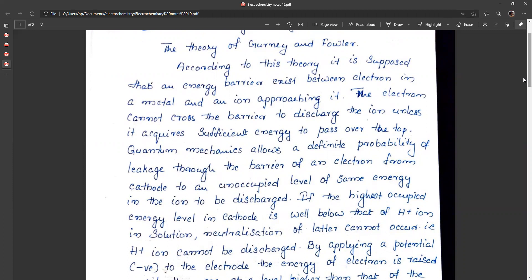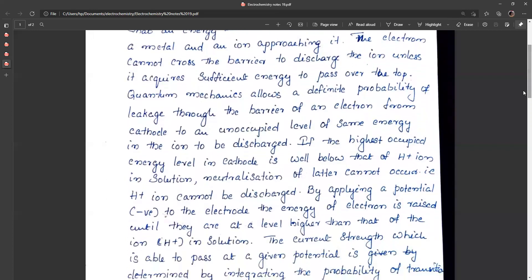Whether it is hydrogen ion or any ion to be discharged, this quantum mechanics allows a passage of electron through tunneling-like process. If the highest occupied energy level in cathode is well below that of hydrogen ion in solution, this type of neutralization allowed by quantum mechanics cannot occur and the hydrogen ions cannot be discharged.